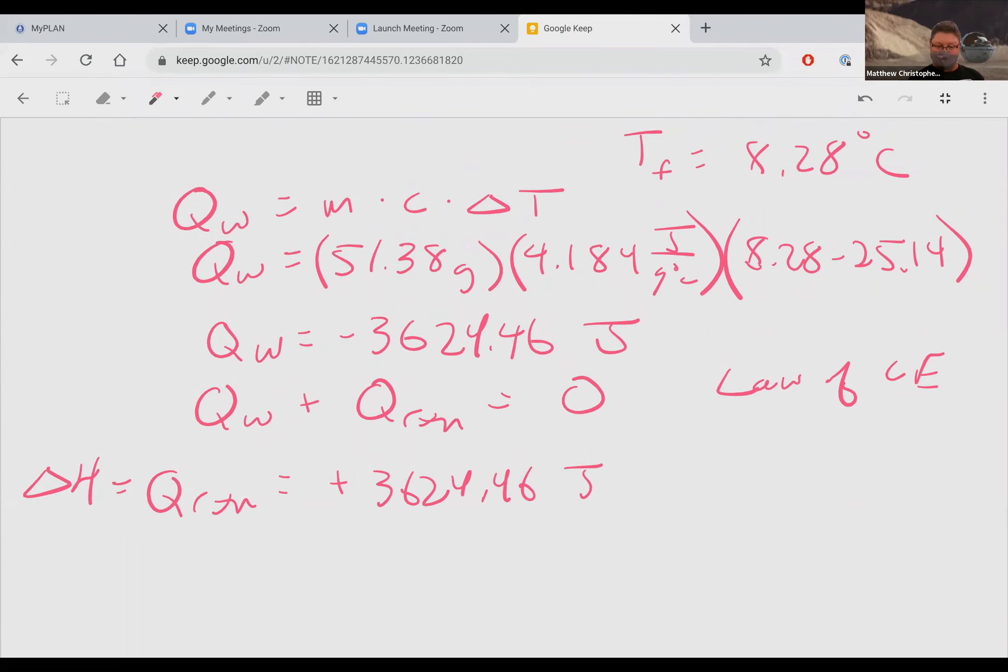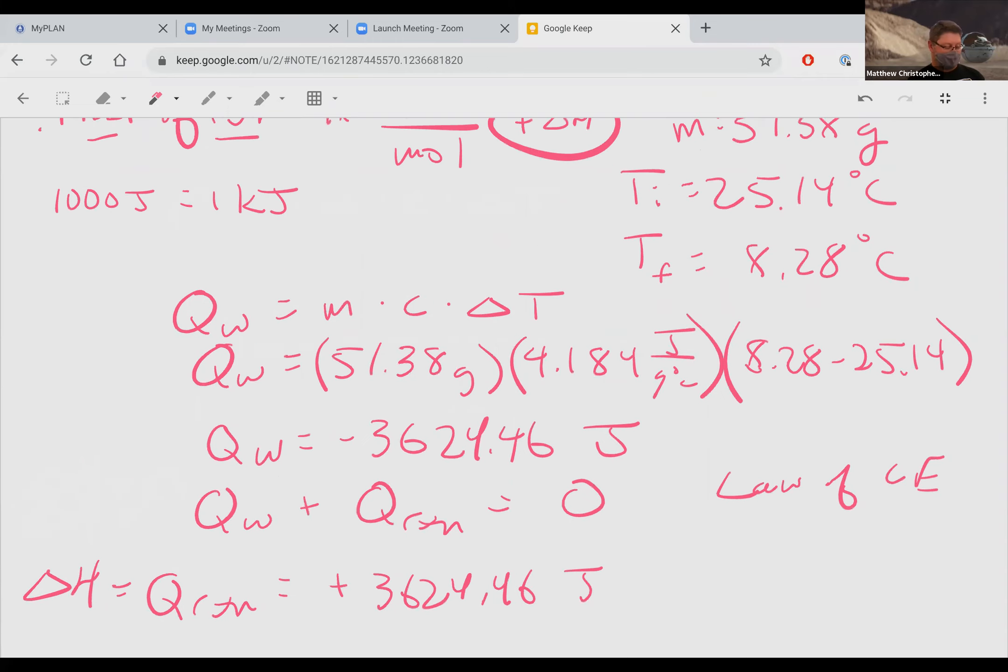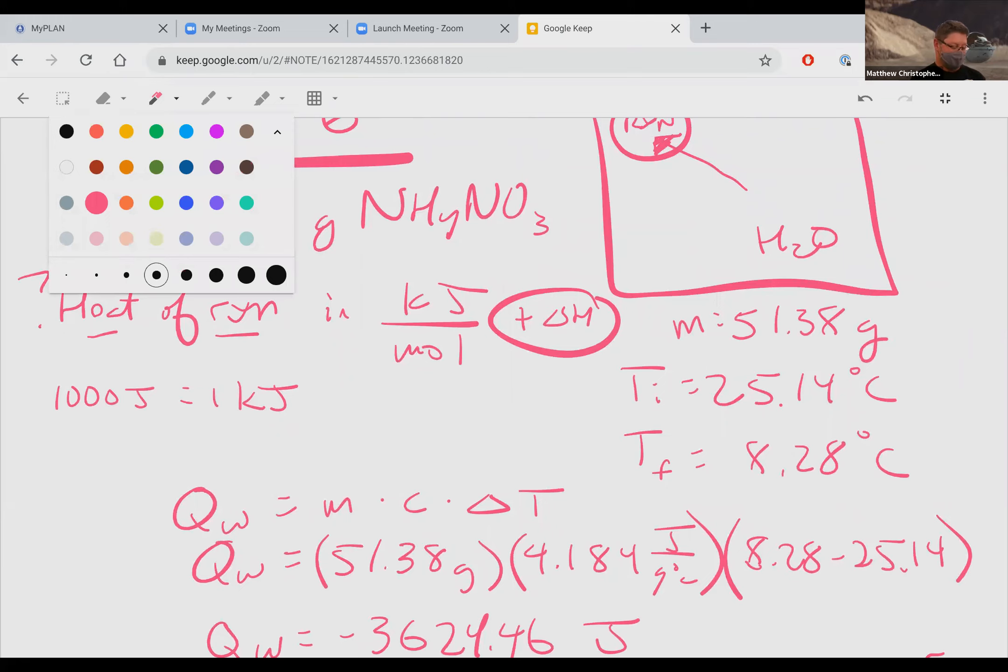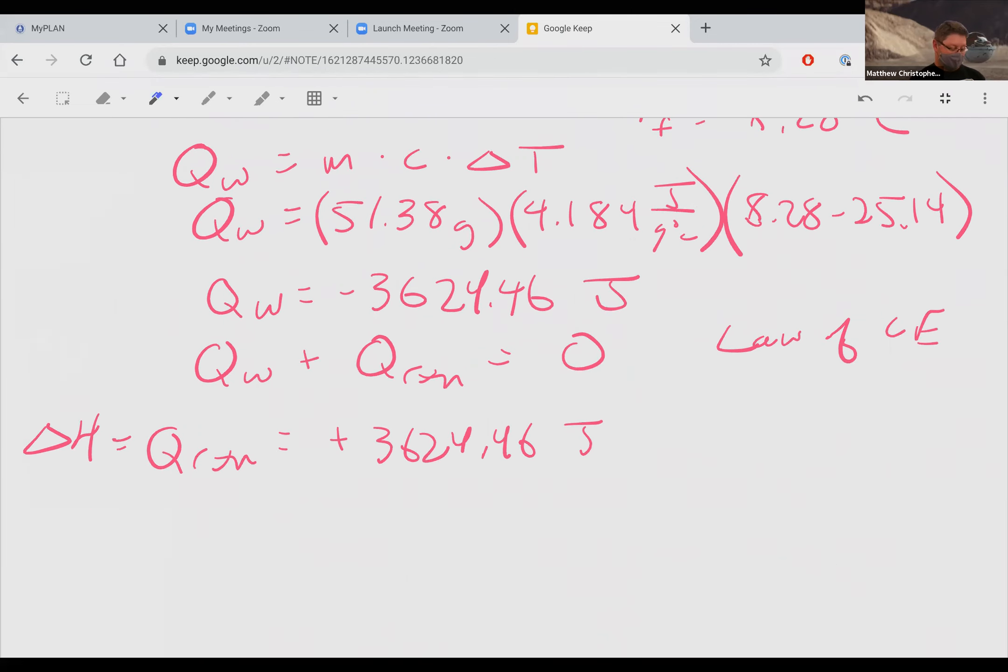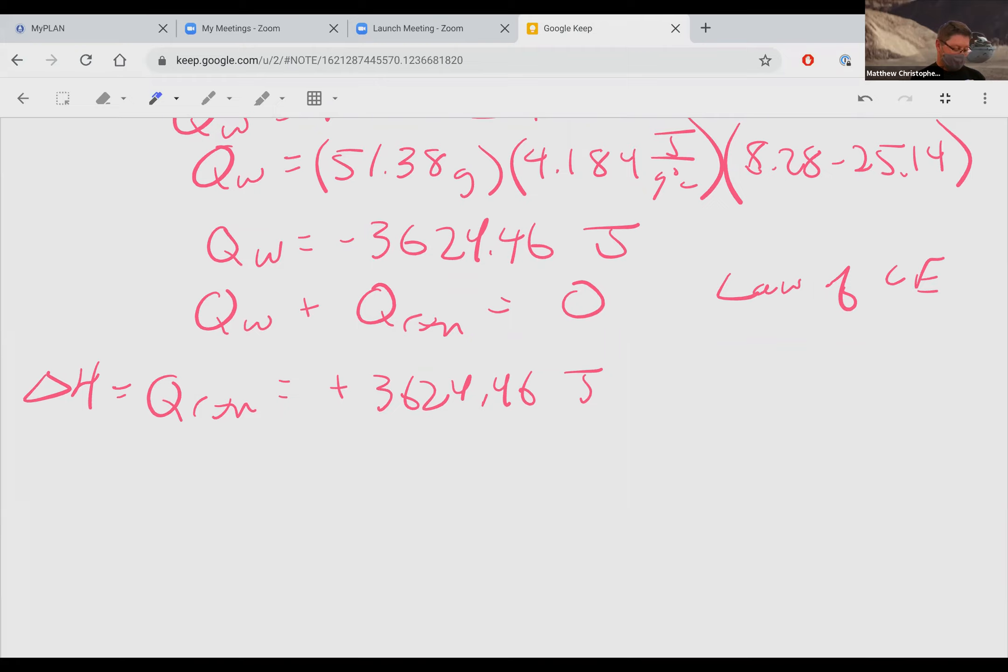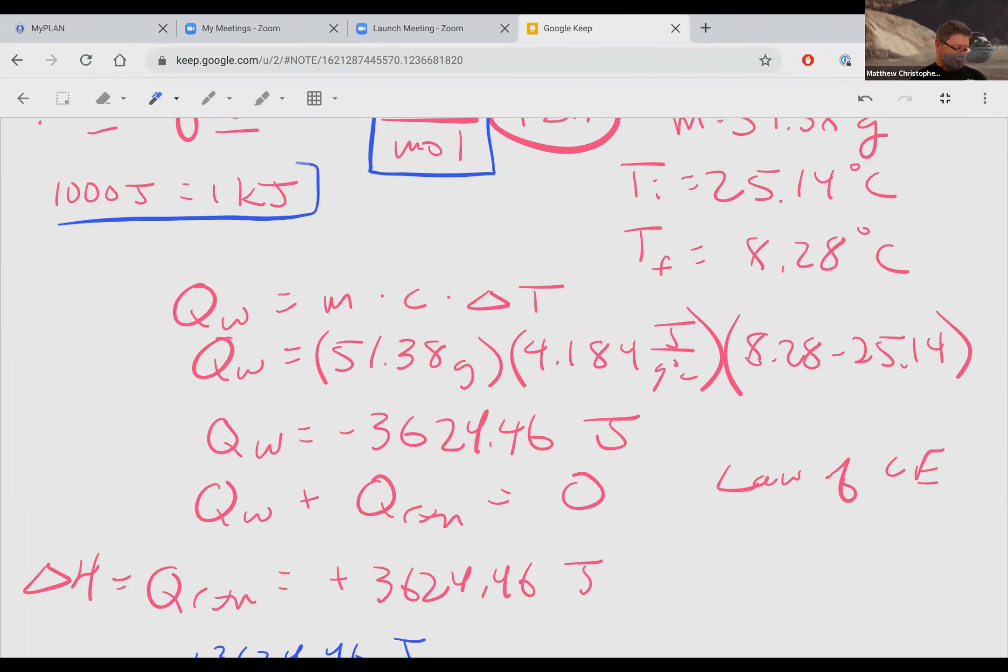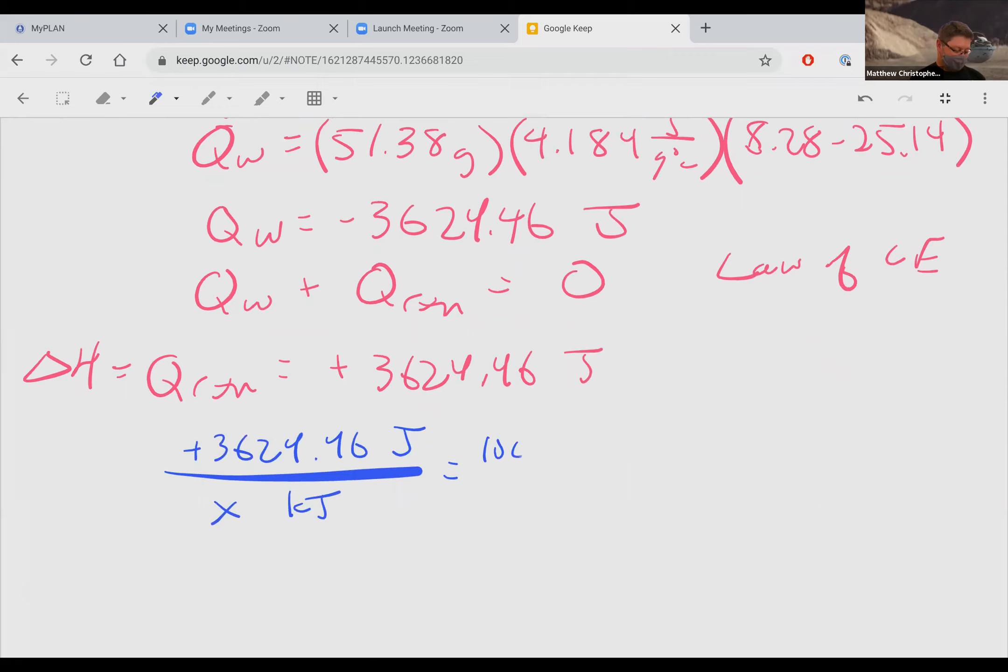This here would be great if you just wanted your answer in joules, you'd be done. Problem is, they don't usually make it that nice. You don't want it just in joules. You want it in kilojoules per mole. So to get it in the kilojoules per mole, I'm going to convert this value. That value is 1000 to 1. 1000 joules is equal to 1 kilojoule. And so x is going to be equal to 3.62446 kilojoules.